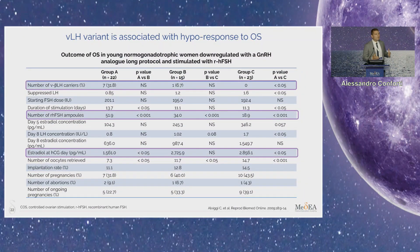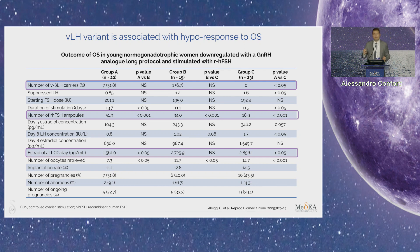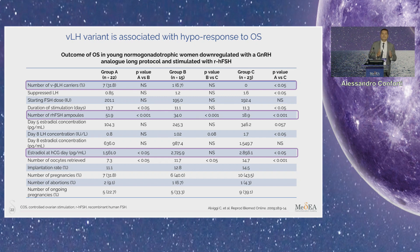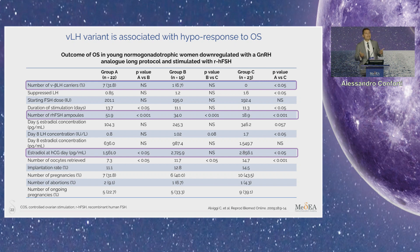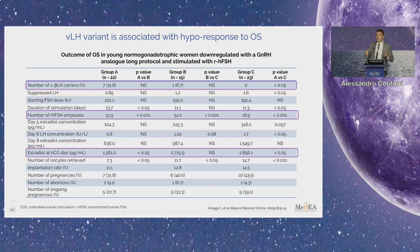Apart from polymorphisms related to the FSH receptor, even those affecting the LH beta molecule could promote a hyper-response profile. We should not think that only FSH matters for follicular growth, because LH is also very important, especially in the last part of ovarian stimulation. This polymorphism is also related with a hyper-response profile. So both LH and FSH are very important for follicular growth, and we should consider both systems together to properly identify a patient with a hyper-response profile.